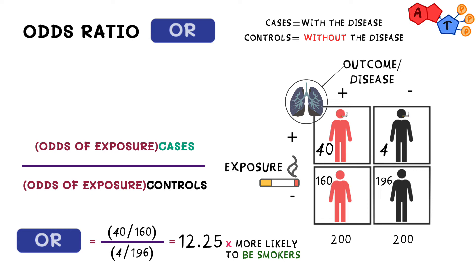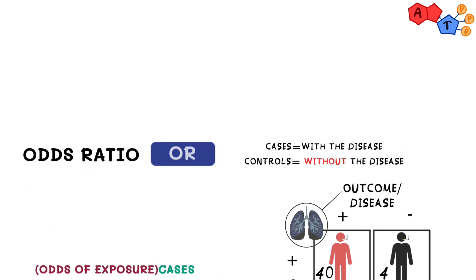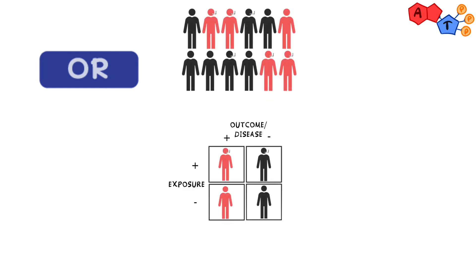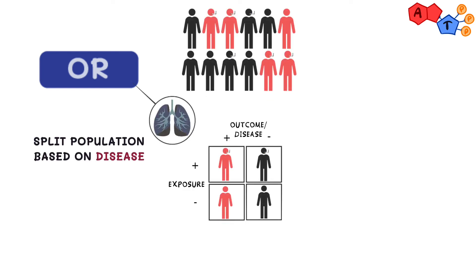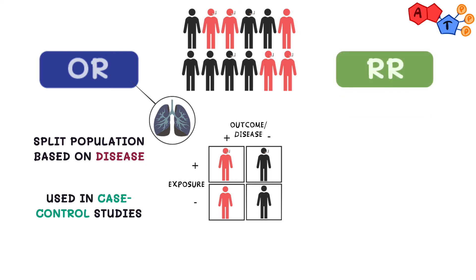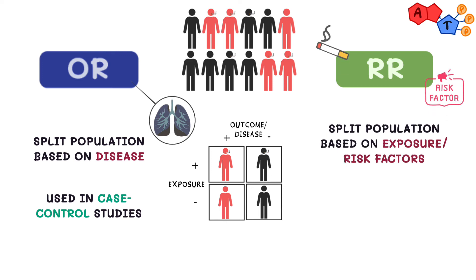So why is this the case? This is due to an important relationship between study designs and the two formulas. Odds ratio requires splitting the population first based on whether or not they have the disease — that's case-control. For relative risk, we split the population based on exposure and risk factors, making it better suited for cohort studies. This is why odds ratio is used with case-control studies and relative risk is used with cohort studies.